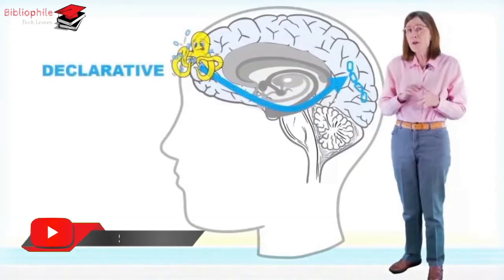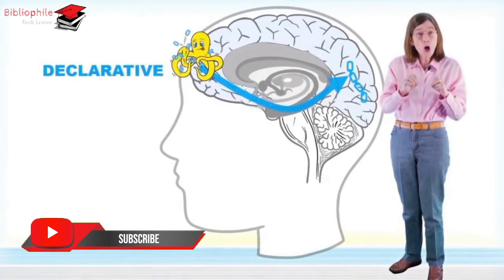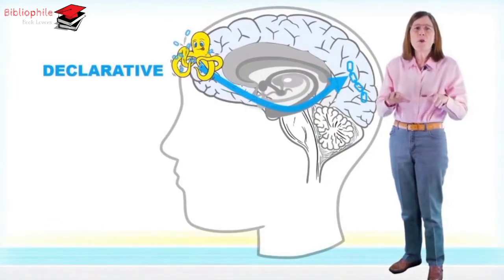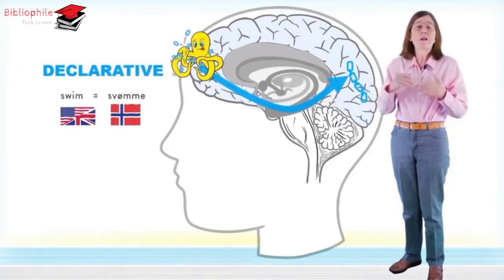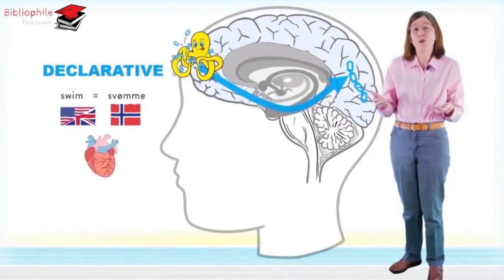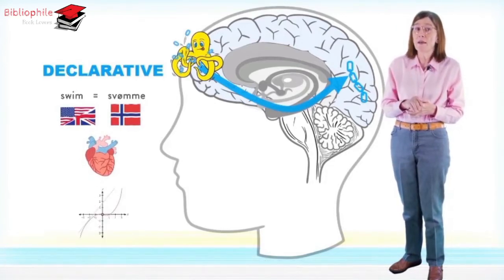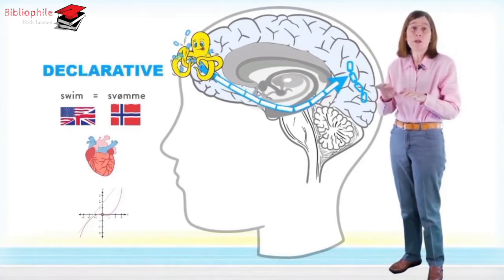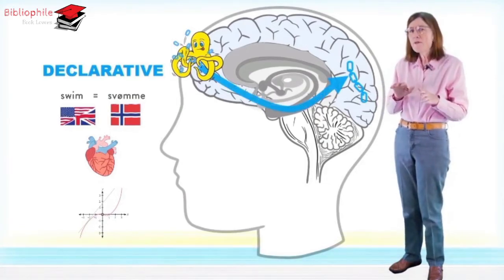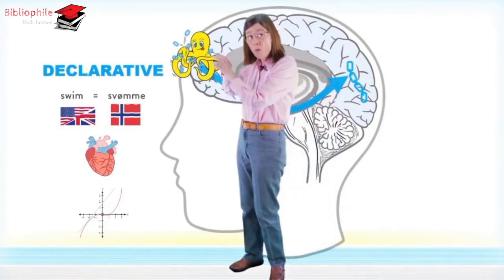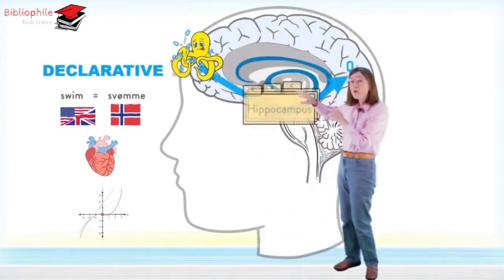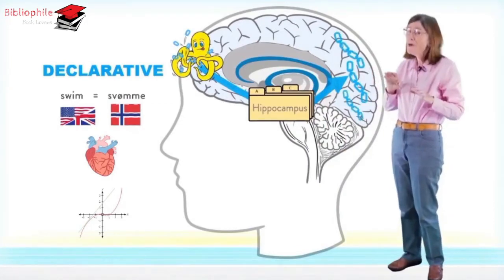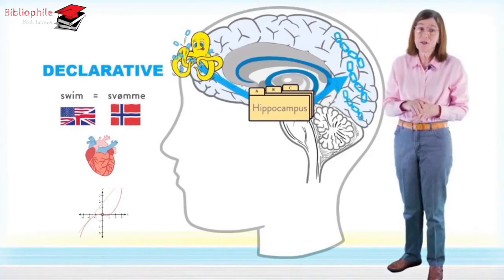The declarative system is what you use when you're first consciously trying to learn something. For example, when you're trying to memorize a new word in a foreign language, or understand how cardiac function works, or learn a new technique in math. Declarative learning progresses step by logical step. The declarative system takes information from working memory, goes through the hippocampus, and into long-term memory. You're mostly conscious of your thinking through the declarative system.